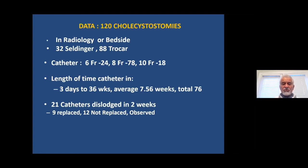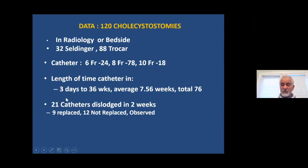In about half of these dislodged catheter cases, the catheter was replaced because the gallbladder was still distended. In 12 cases, the gallbladder was not distended, the obstruction to the cystic duct was relieved, and the patient was observed without catheter replacement. But it is not desirable at all to have the catheter taken out prematurely. If there are two things you have learned: one, check the INR and platelet to avoid bleeding risk; and two, secure the catheter.